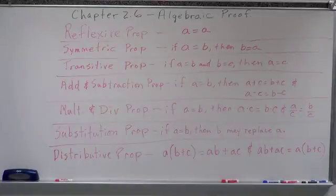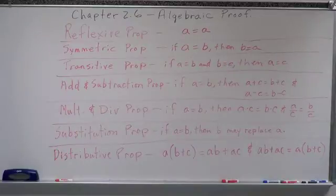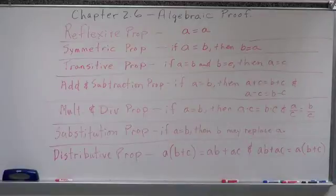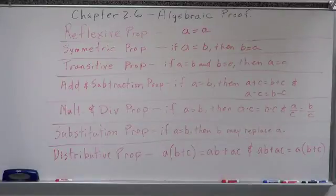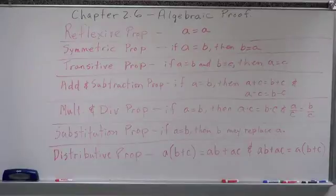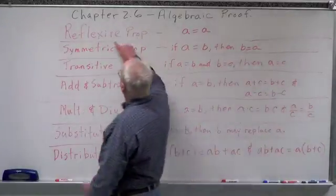Today we're going to look at how to break proofs. We're going to use everything that we've talked about in logic — conditional statements, syllogism, deductive reasoning. We're going to begin to actually talk about proving things. In 2.5 we did talk a little bit about paragraph proofs, but we're going to be using formal proofs — two-column formal proofs — pretty much all the time, and we're going to start looking at those today.